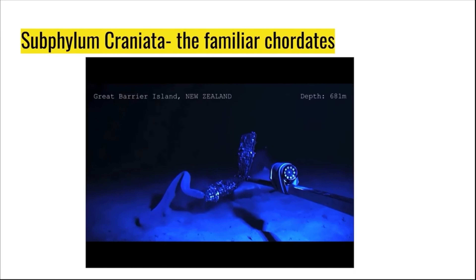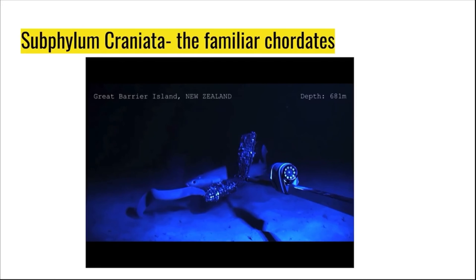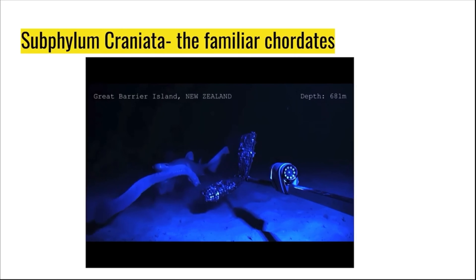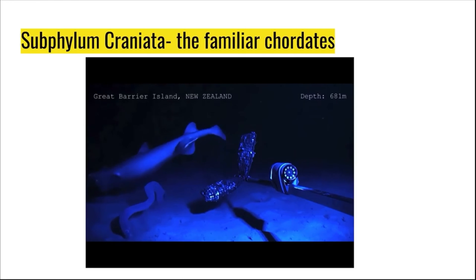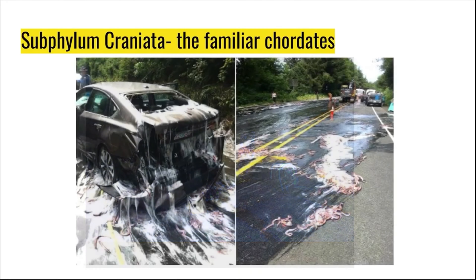When a shark approaches a hagfish and bites, it immediately secretes gill-clogging slime. Here you can see the result of a truck filled with hagfish that spilled onto the roadway. The slime produced by the hagfish covered everything, including this car.